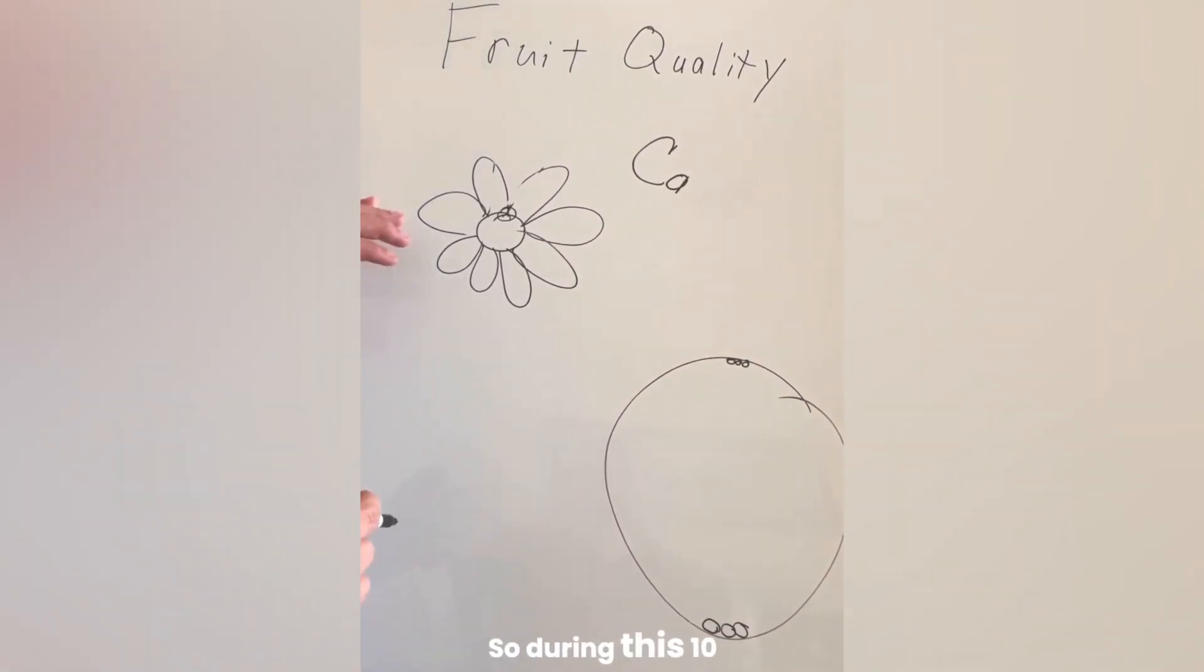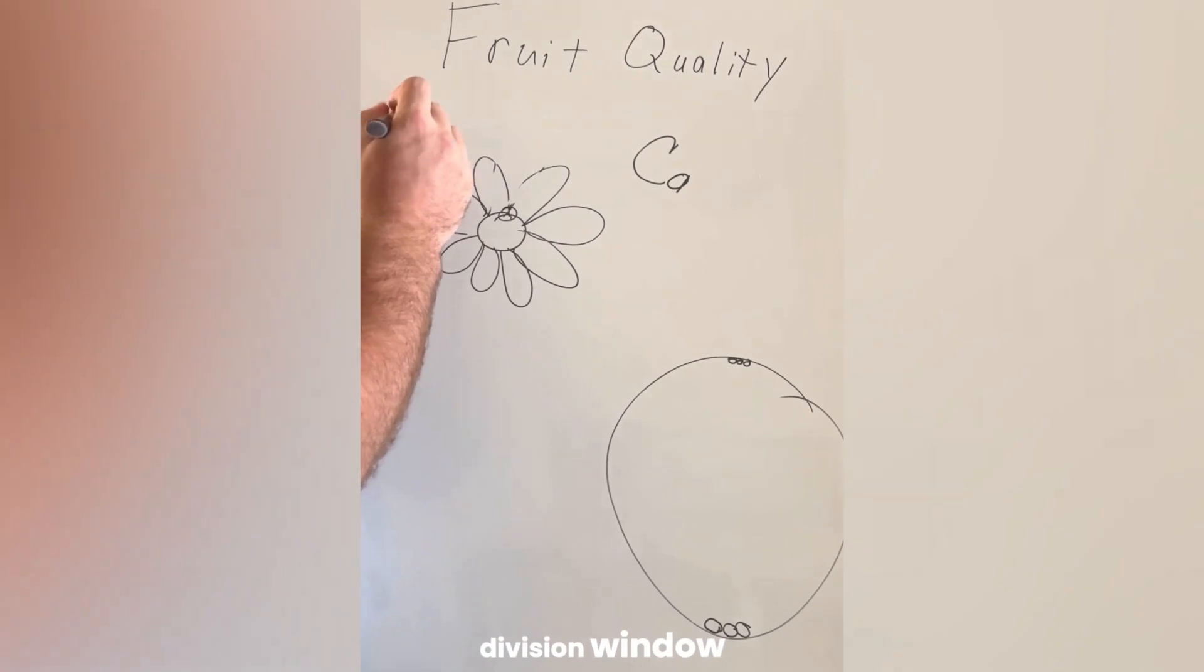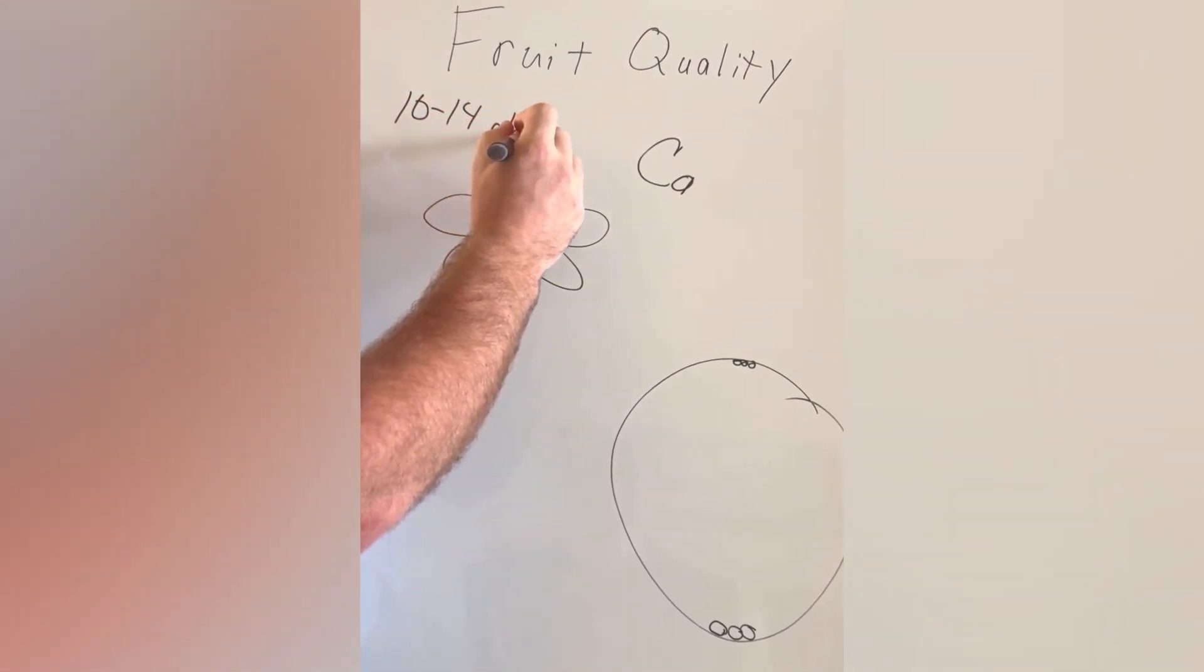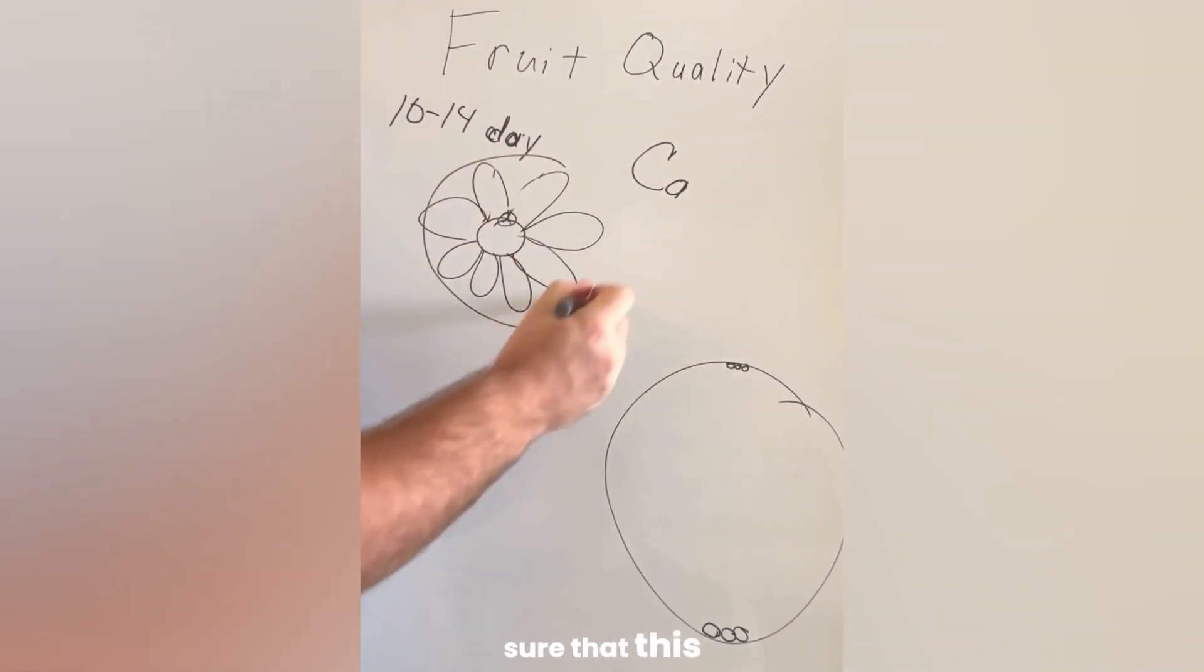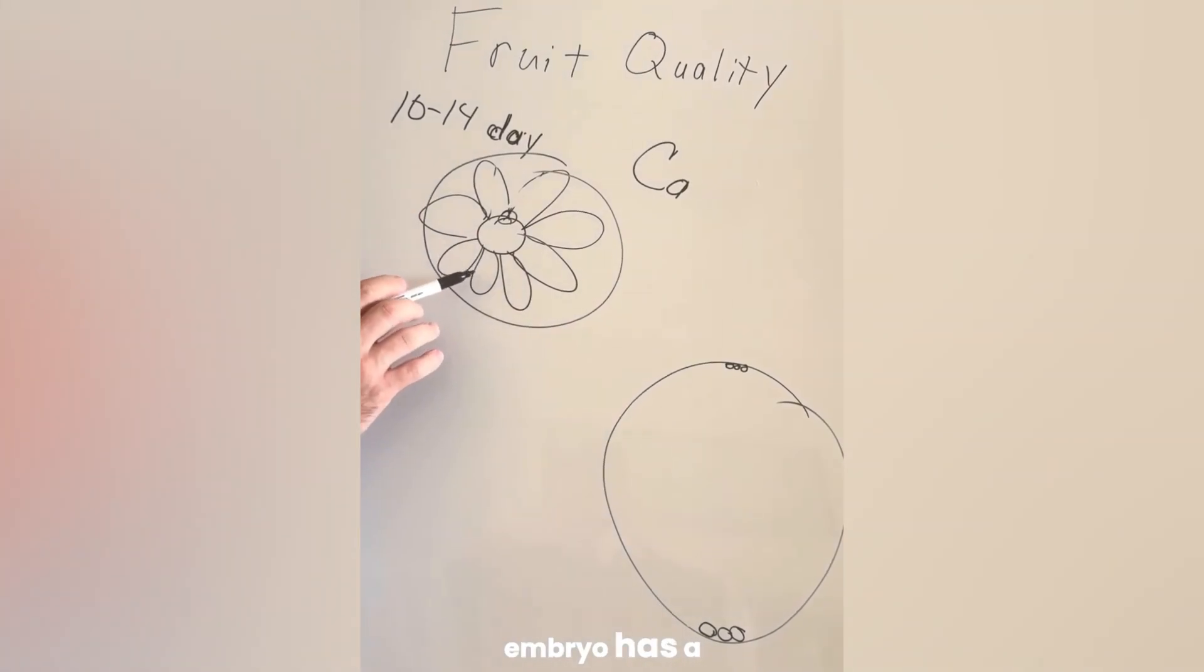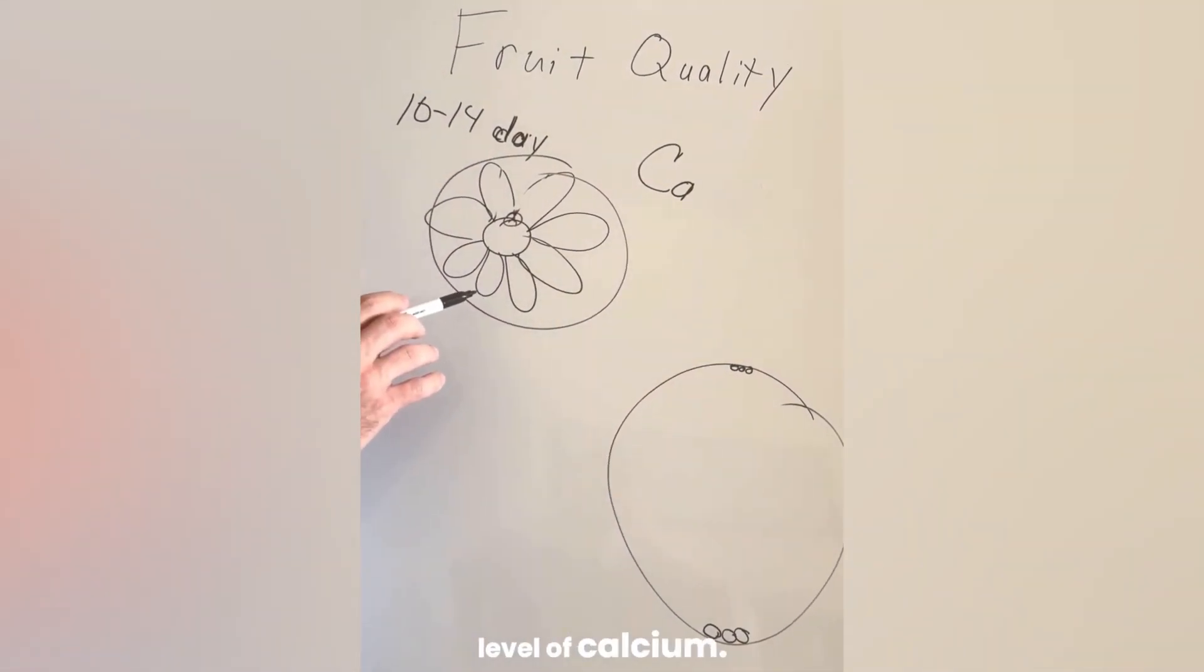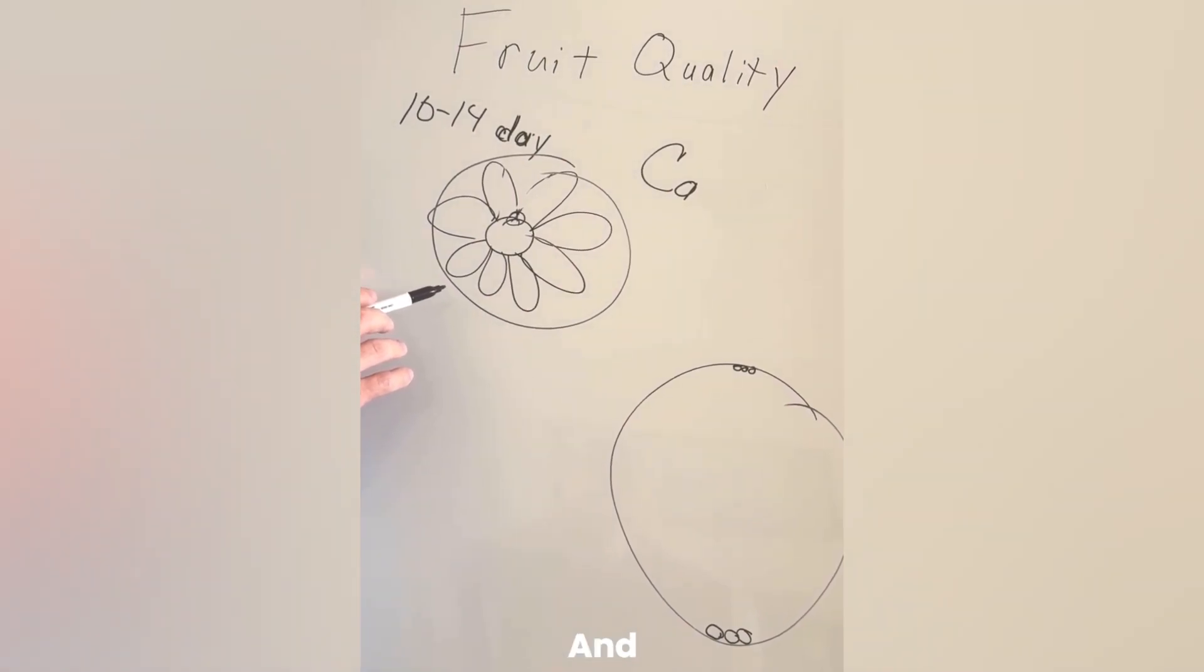So during this 10 to 14 day cell division window is the period where we need to make sure that this developing embryo has a surplus level of calcium. And then later on...